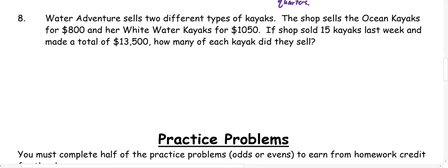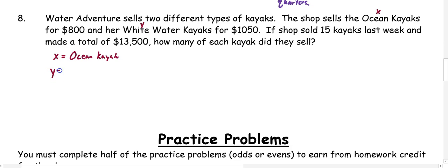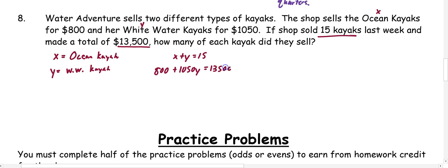Let's look at one more word problem. Water Adventure sells two types of kayaks: ocean kayaks for $800 and whitewater kayaks for $1,050. If the shop sold 15 kayaks last week for a total of $13,500, how many of each kayak did they sell? I'll use X for ocean and Y for whitewater. So X plus Y equals 15, and 800x plus 1,050y equals 13,500.